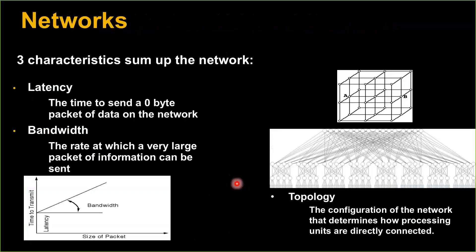The network, we're going to find out with MPI, is largely hidden from us — we're not going to have to worry about it, which is a wonderful thing about MPI. It's going to make the network from the programming perspective mostly go away. But the actual network does have performance implications — just because our software abstracts it away doesn't mean it's not really there affecting things. To understand the general performance of a network, you only need to understand the latency, the bandwidth, and the shape or topology of the network.